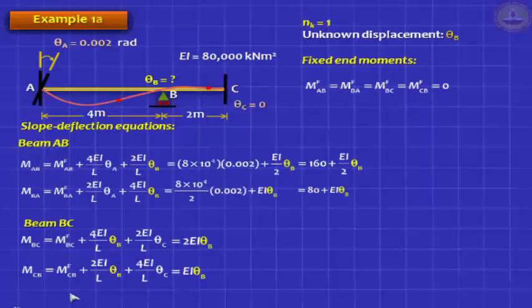You will find that it simplifies to these two equations. Now, you need to invoke EI by L. EI is given to you as 80,000 kilo Newton meter square. L is known for that beam, 4 meters for AB, and for BC it is 2 meters. You need only for AB. In those values, you will get 4 equations, and clearly the only unknown is theta B. If you know theta B, you can get the moments. How do you get theta B? You need an equilibrium equation.